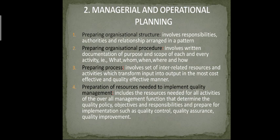Second step: written documentation of purpose and scope of each activity — what, who, when, where, and how. Third: preparing process, which involves a set of interrelated resources and activities that transform input into output in the most cost-effective and quality-effective manner. Fourth: preparation of resources needed to implement quality management, including resources for quality control, quality assurance, and quality improvement.